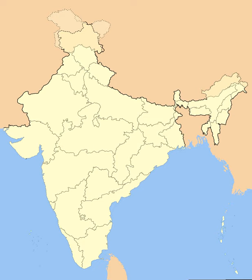The Part C states were Ajmer, Bhopal, Bilaspur, Coorg, Delhi, Himachal Pradesh, Kutch, Manipur, Tripura, and Vindhya Pradesh. The only Part D state was the Andaman and Nicobar Islands, which were administered by a lieutenant governor appointed by the central government.